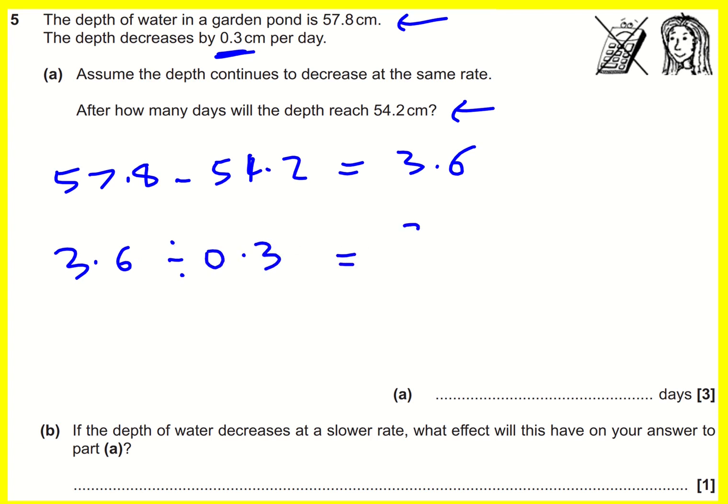I can write that as 3.6 divided by 0.3 and then standard practice for this sort of thing is to basically get rid of decimals, times top and bottom by 10 to make it 36 over 3 which is 12. It's going to be 12 days for the depth to reach that height.